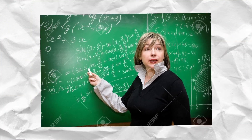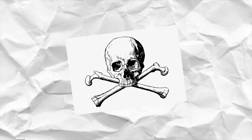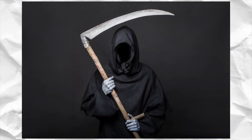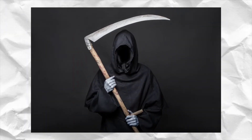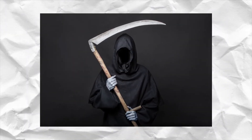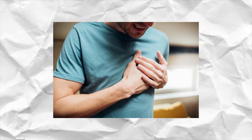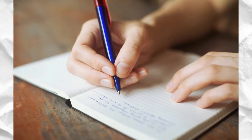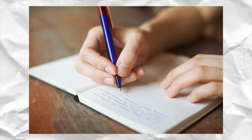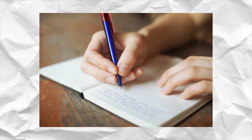He opens the Death Note and the first pages describe the rules and how to use the magic notebook. The rules are as follows: 1. The human whose name is written in this note shall die. 2. This note will not take effect unless the writer has the person's face in their mind when writing his or her name — therefore, people sharing the same name will not be affected. 3. If the cause of death is written within 40 seconds of writing the person's name, it will happen. 4. If the cause of death is not specified, the person will simply die of a heart attack. 5. After writing the cause of death, details of the death should be written in the next 6 minutes and 40 seconds.